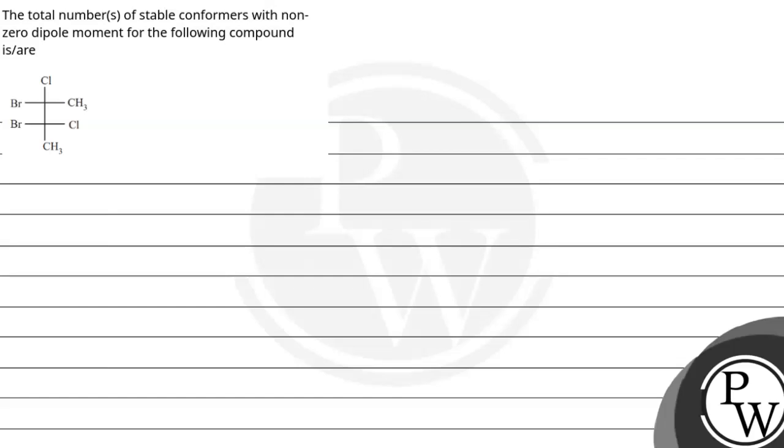The question says the total number of stable conformers with non-zero dipole moment for this compound is R. So here we have a compound given and we have stable conformers which are non-zero. So first we need to know